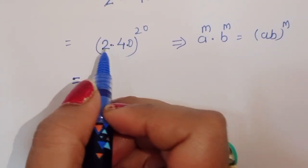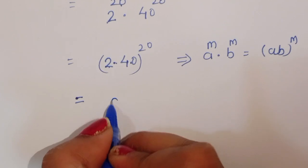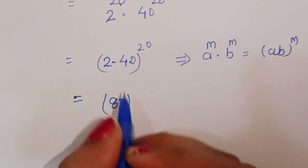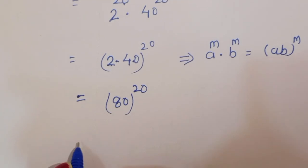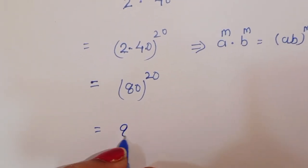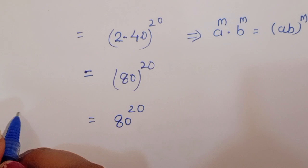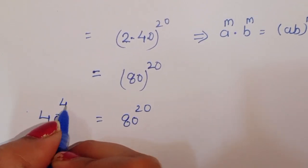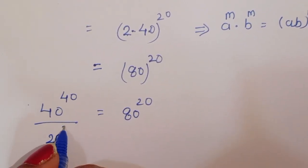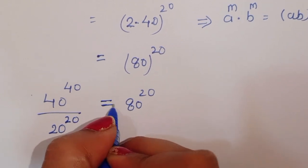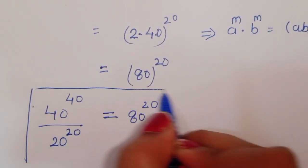Using the formula a power m times b power m, we can write this as 80 power 20. So the value of 40 power 40 divided by 20 power 20 is equal to 80 power 20. This is the solution.